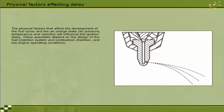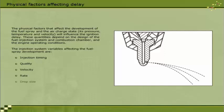The physical factors that affect the development of the fuel spray and the air charge state, its pressure, temperature and velocity, will influence the ignition delay. These quantities depend on the design of the fuel injection system and combustion chamber and the engine operating conditions. The injection system variables affecting the fuel spray development are: injection timing, quality, velocity, rate, drop size, and spray form or type.